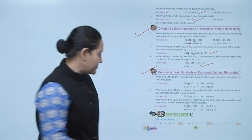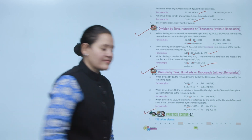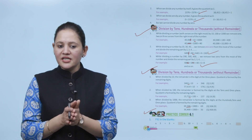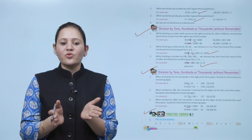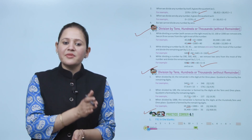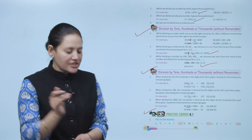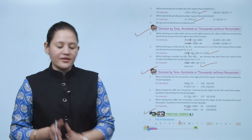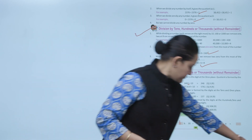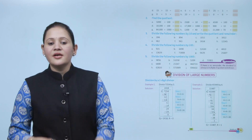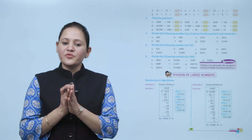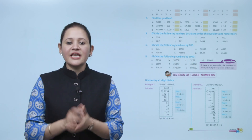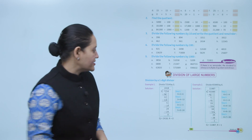Practice column 6.1: fill in the blanks. For 3 divided by 3 — since dividing a number by itself gives quotient 1, the answer is 1. Practice all the questions of this exercise, then move to the next topic: division of large numbers.